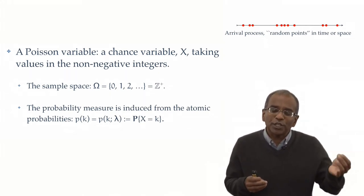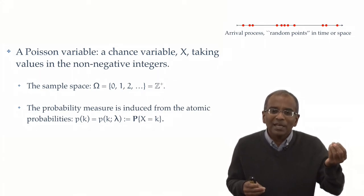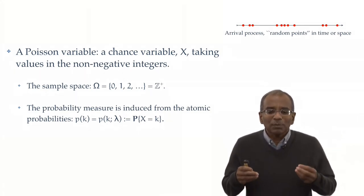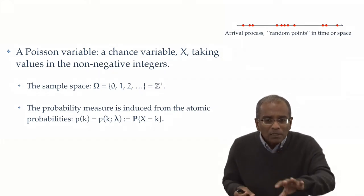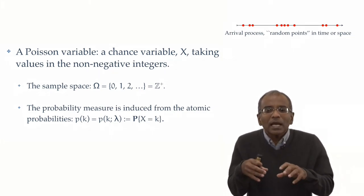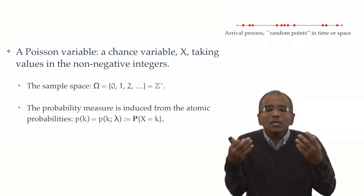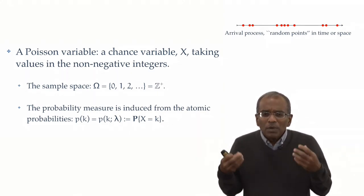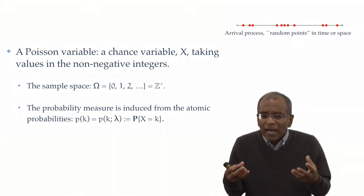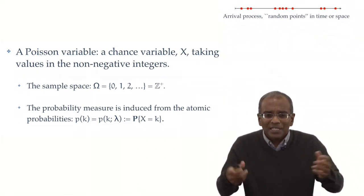And to each integer k, we want to associate a probability. This is precisely what we call the Poisson probability, p of k and lambda. Underlying this experiment is a fixed underlying positive parameter lambda, which governs, if you will, the rate at which arrivals are happening in this experiment.